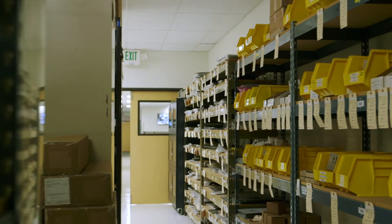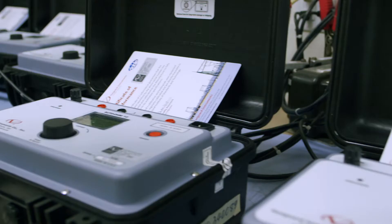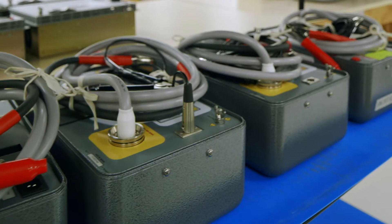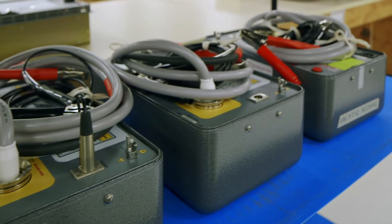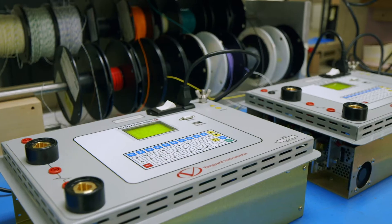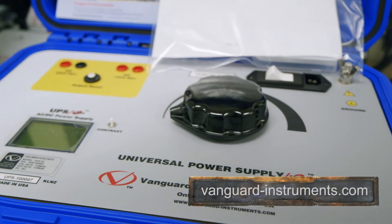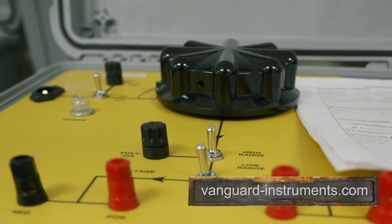Over the years, Vanguard's portfolio has grown tremendously to include microcomputer-based precision micro-ohmmeters, single and three-phase transformer winding turns ratio testers, transformer winding resistance meters, mega-ohm resistance meters, and a variety of other application-specific products.